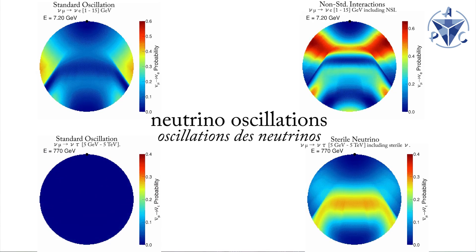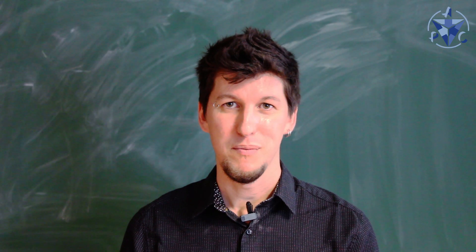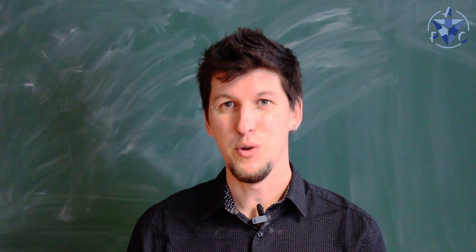You see, the standard model predicts that neutrinos cannot have mass, but neutrino oscillations require that they do.